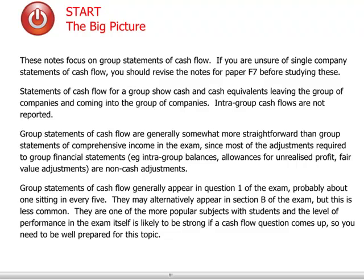The reason for that is because most of the consolidation adjustments are non-cash, such as an allowance for unrealized profit, elimination of intra-group balances, or adjustments to the fair value of net assets at the date of acquisition.